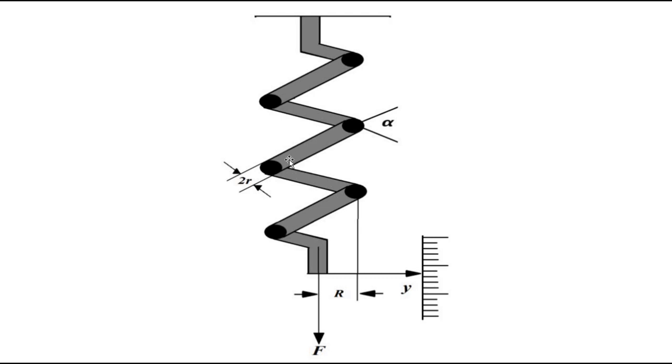Then another important parameter is the diameter or radius of each coil turn, the coil material which is used. These three parameters: the helix angle alpha, the mean coil radius capital R, and the coil thickness or radius small r are very important.